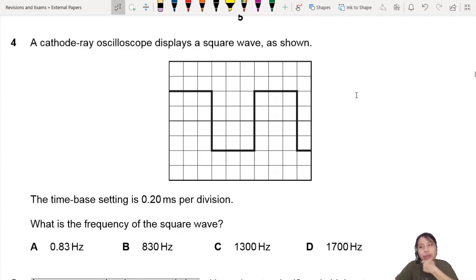A cathode-ray oscilloscope displays a square wave as shown. Oh, this is unusual. The time-base setting is 0.2 milliseconds per division.